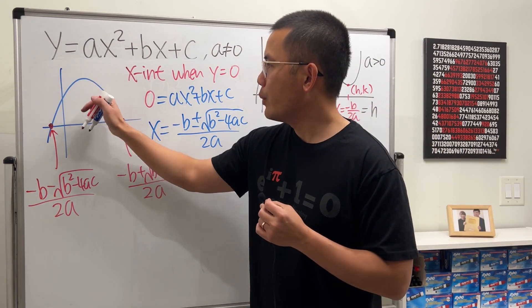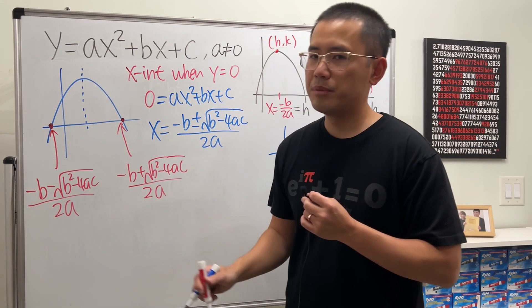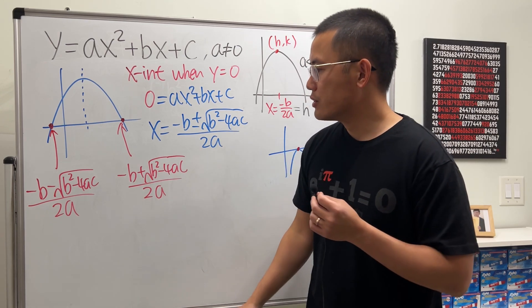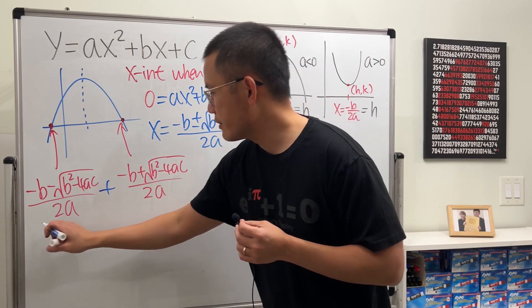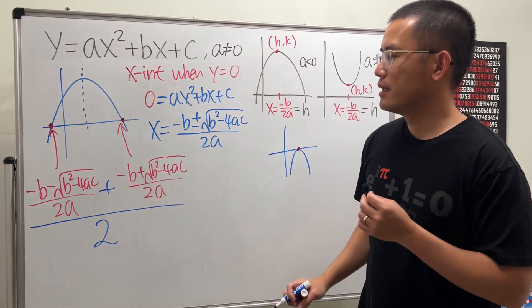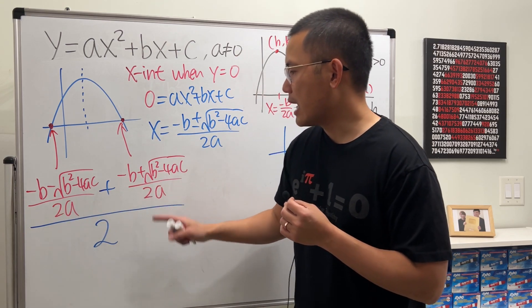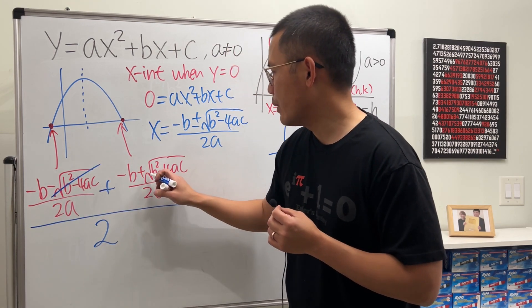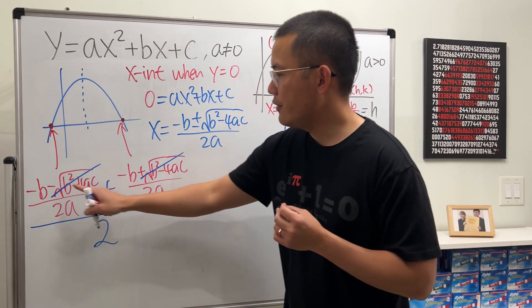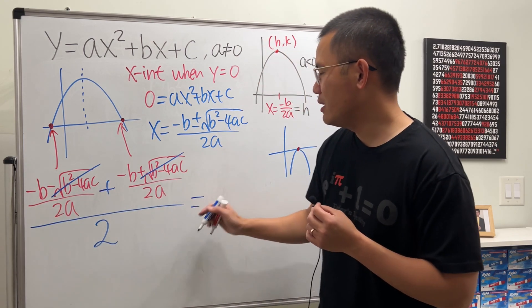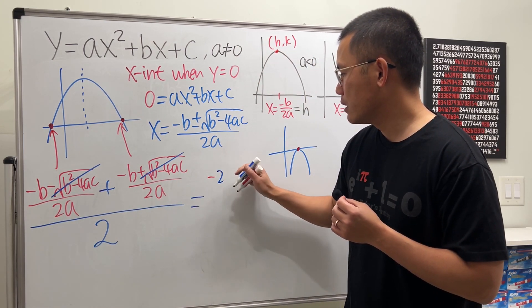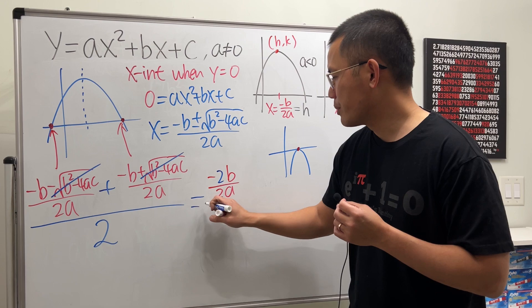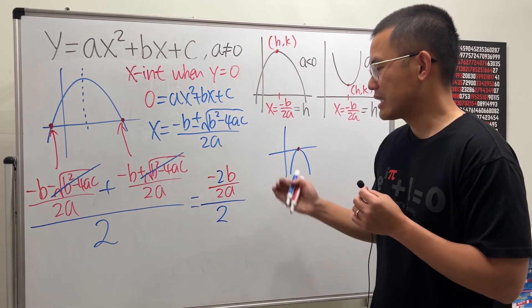This x-intercept is negative b minus square root of b squared minus 4ac all over 2a. And then this right here is negative b plus square root of b squared minus 4ac all over 2a. Now, how are we going to find the middle? To find the middle, you always add two things together and divide it by two. That's how we find the average as well. So, we are going to add this and that together and after that, divide it by two.